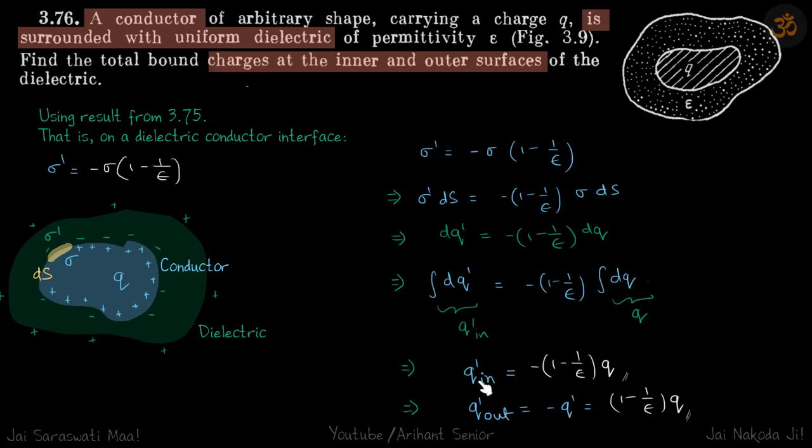We get q dash in is equal to minus one minus one by epsilon times q and negative of that is q dash out which were our answers. Thank you.